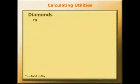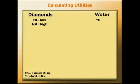We want to show that the total utility of diamonds is low, but the marginal utility of diamonds is high, and the total utility of water is high, but the marginal utility of water is low.